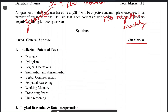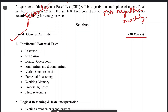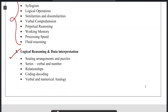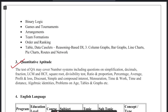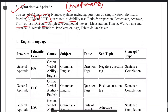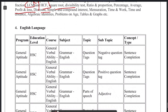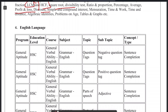The 30-mark general syllabus is comprised of the following: General Aptitude — this portion can be covered from any general books. It includes intellectual and potential test, logical reasoning, data interpretation, quantitative aptitude, LCM, HCF, profit and loss, discount, square root, basic mathematics, and English language.